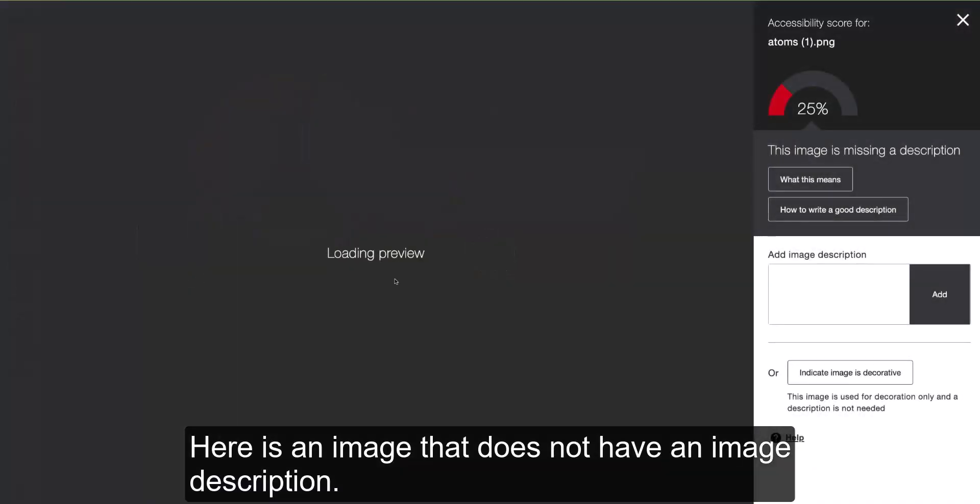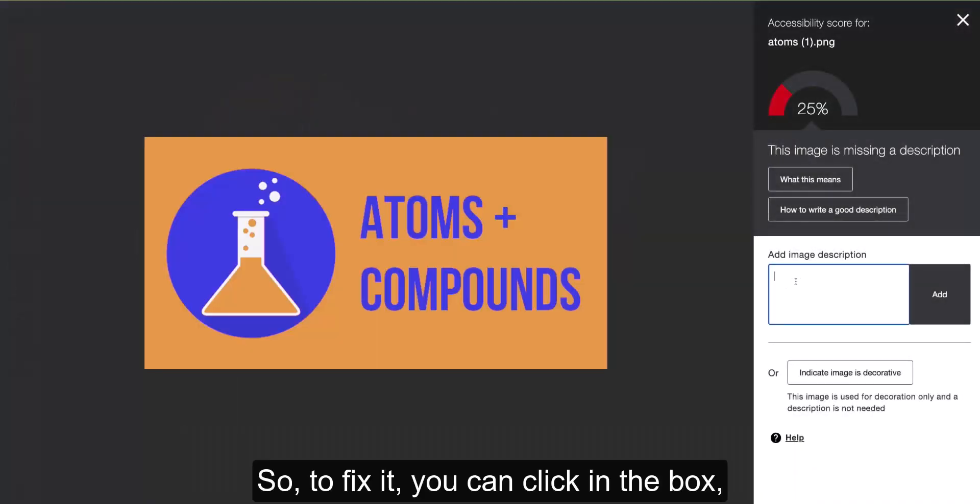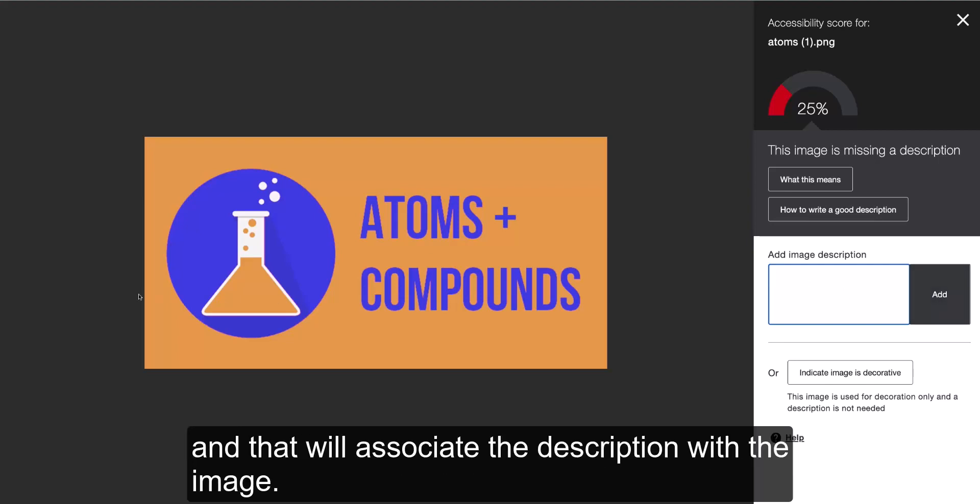Here is an image that does not have an image description. To fix it, you can click in the box, type in the description, click on add, and that will associate the description with the image.